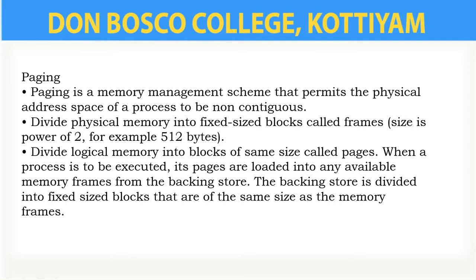The pages can be stored at different locations of the memory. For example, for a 5KB process, if the available memory space is in the form of 1KB, then another 3KB, then 1KB — the 5KB process will be divided and stored: 1KB in one memory space, 1KB in another, and 3KB in a 3KB memory space. So it does not require continuous memory locations.